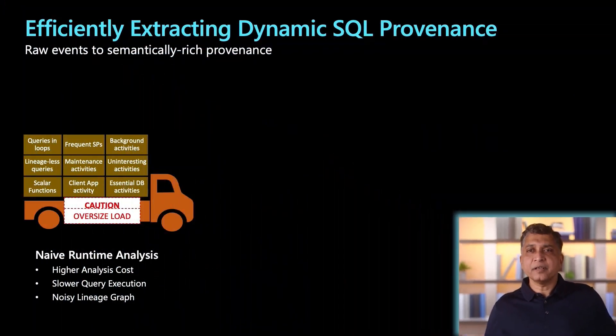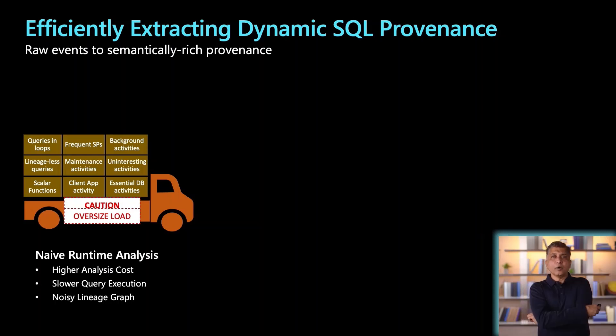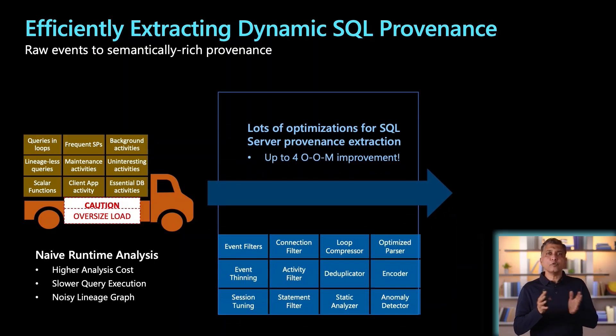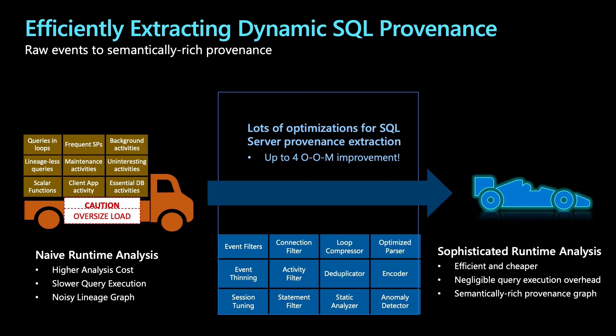However, if you try to take all this information in the X events and extract lineage in a straightforward way, you are going to have a tough time of it. It's like an overloaded truck — there's simply too much information and too much noise: repeated loops, a whole collection of things that are not of interest to lineage. It's simply too expensive. However, we have put in a ton of work — a whole slew of optimizations, ranging from loop optimizations to eliminating irrelevant events to massive compression. Taken together, we can speed this whole thing up by over four orders of magnitude — that's a factor of 10,000. And that is the version of dynamic lineage extraction that you actually see for SQL Server in Purview.